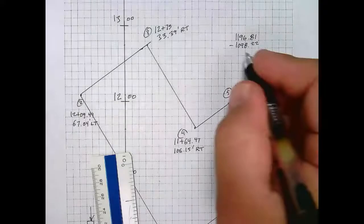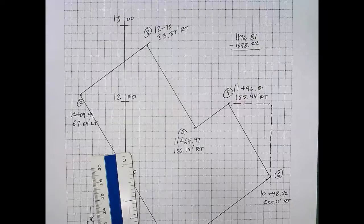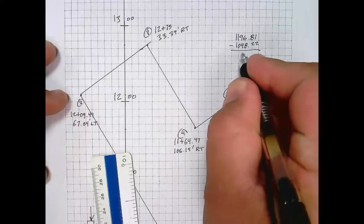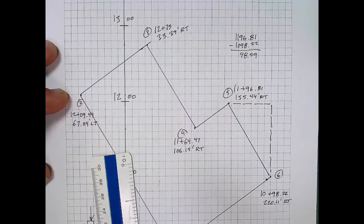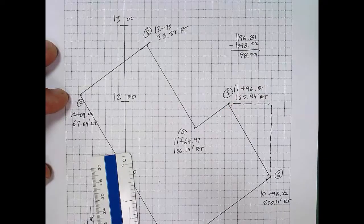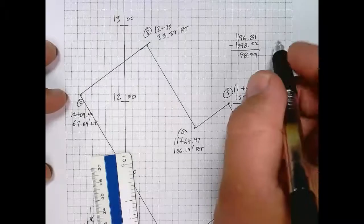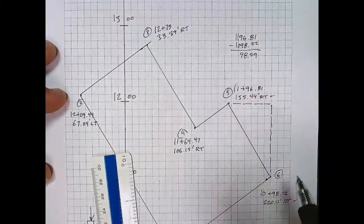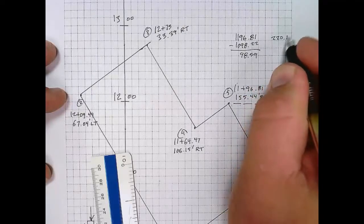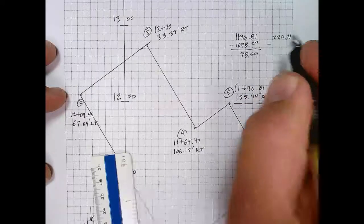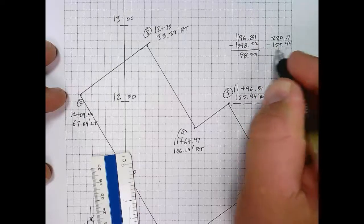We'll come up with the dimensions of this by first taking the difference in the stations, as you see here. Then we'll take the difference in the offset. So we're trying to find the dimensions of the right triangle that you see sketched here. I'm going to take the difference in my offsets: 220.11 feet minus 155.44 feet, and that gives me the left-right dimension or the top side of this right triangle.